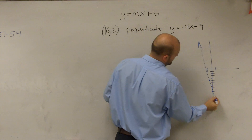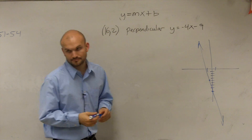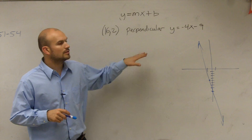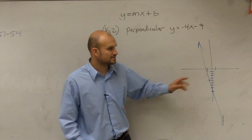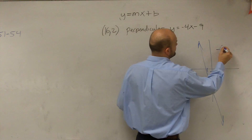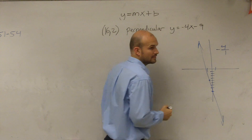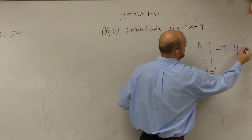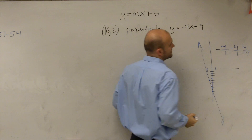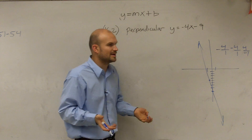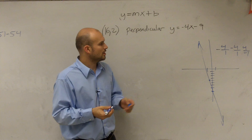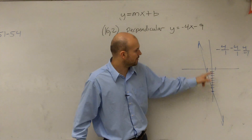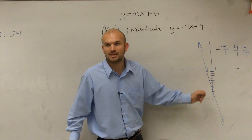So my graph looks something like that. Remember, slope is negative 4 over 1, which means it can be negative 4 over 1 or 4 over negative 1 — either way it's going to be negative. So I could go down 4 to the right one, or up 4 to the left one.